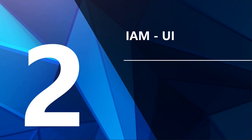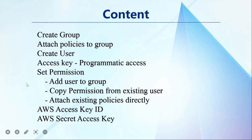The first user we will have to create using the UI. This is what we are going to do in this video: we will create a group and then we will attach policies to the group. By attaching policies to the group, we will be assigning permission to the group. And then we will create a user, and that will be a programmatic access user, so it will have the access key. You will get to know about it more when I create the user in the UI.